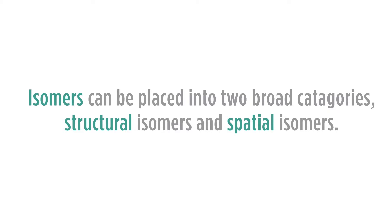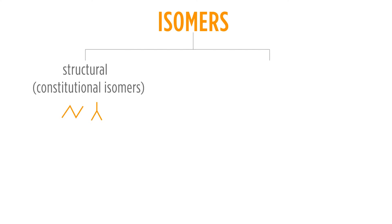If we think about isomers again, separating into structural and spatial, we can look at this flowchart. If we have a structural isomer, the connections between the atoms are not the same — these will be constitutional isomers. If we had four carbons in a straight chain, that would be one isomer. If we had those same four carbons but with three in a straight chain and one carbon attached to the middle, the connections between the atoms are not the same. These are constitutional isomers.